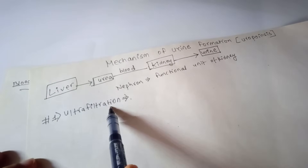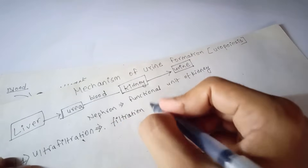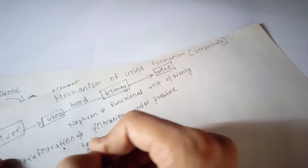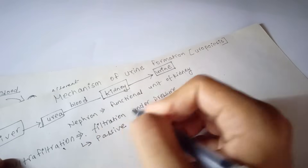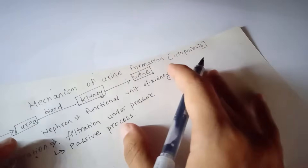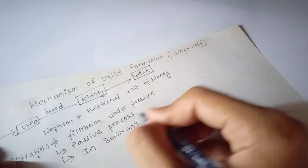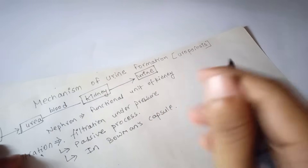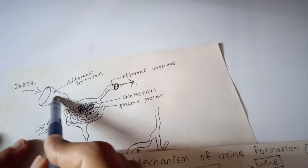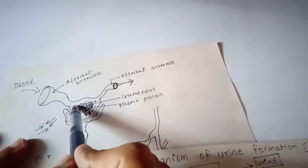Ultrafiltration is the filtration that takes place under high pressure. It is a passive process — it does not require energy. Ultrafiltration occurs in the Bowman's capsule. Blood enters and the fluid is filtered by pressure.